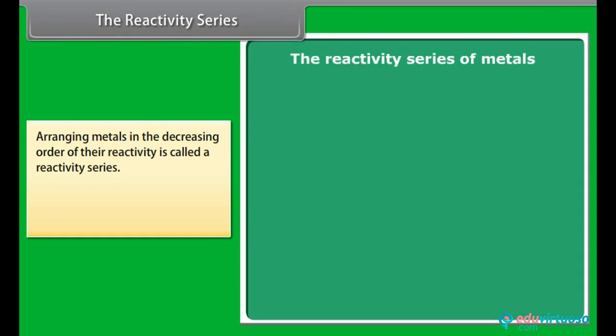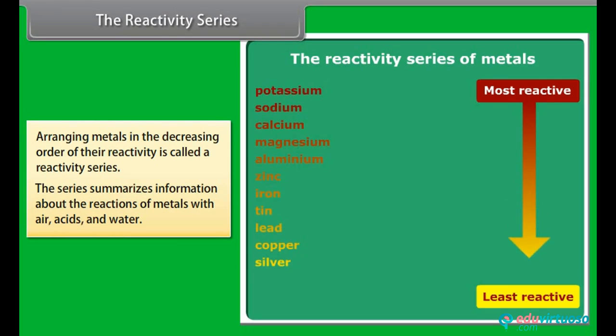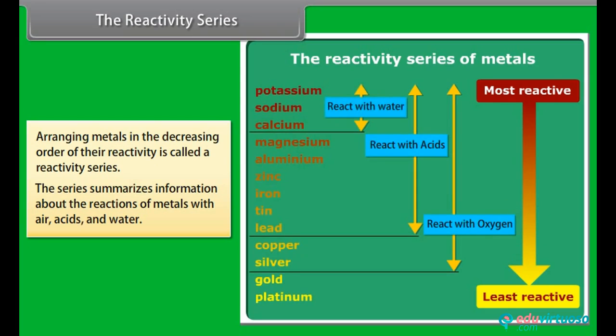The reactivity series. Metals being arranged in the decreasing order of their reactivity is called a reactivity series. It is used to summarize information about the reactions of metals with air, acids and water.